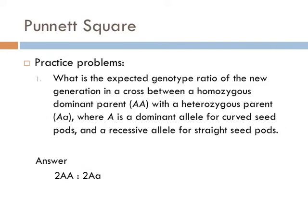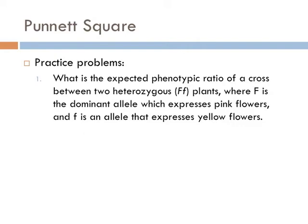Go ahead and pause it again and try this problem. What is this question asking for? It's asking for the phenotypic ratio of a cross, not the genotypic ratio. We still create the Punnett square and we find that a quarter of the offspring are expected to be capital A, capital A; half are expected to be capital A, little a; and a quarter are expected to be little a, little a. So then you have to be able to determine what is the phenotype from that genotype. The capital F is the dominant allele and it expresses pink flowers, whereas the little f is the recessive allele and it expresses yellow flowers. So both the homozygous dominant and the heterozygous genes would express pink flowers, whereas only the homozygous recessive genes would express yellow flowers. You would end up with three pink flowers and one yellow flower.